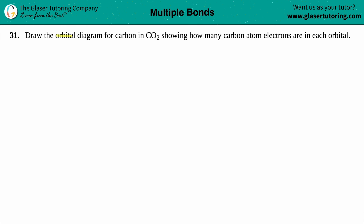Question 31: draw the orbital diagram for carbon in CO₂, showing how many carbon atom electrons are in each orbital. Whenever we want to draw an orbital diagram, there are a couple of things we have to know. The first thing is what element they want us to draw the orbital diagram for — in this case, carbon. We should get the electron configuration of carbon before it binds.